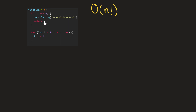The first portion of the code is going to be our base case. So if the value for n passed to this function is equal to zero, then we're going to print some stars and then return. But if we pass a value to n that's not equal to zero, then we will go down to this for loop.